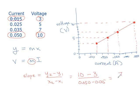10 take away 3 is 7, 0.050 minus 0.015 is 0.035. Divide that out and you get 200 for our m. So the formula governing this thing is v equals 200i.